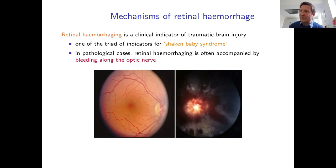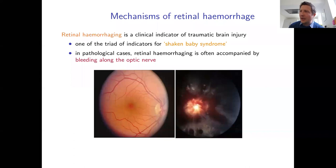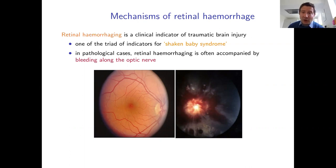Retinal hemorrhaging is the central topic of this talk. The goal is to build mathematical models that will, hopefully, lead to a predictive model to understand retinal hemorrhage in more detail. The first step is to examine what mechanisms clinicians believe cause retinal hemorrhaging.